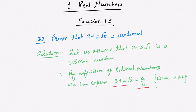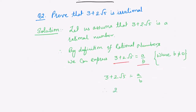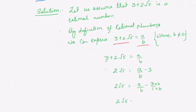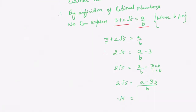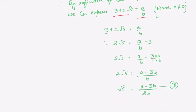Now let us check: since 3 plus 2 root 5 equals a upon b, therefore 2 root 5 will be equal to a upon b minus 3. Rearranging, 2 root 5 equals a minus 3b upon b. Therefore, root 5 equals a minus 3b upon 2b. Let us take this as statement number 1.